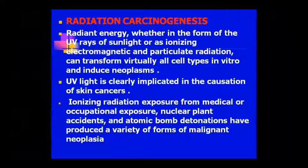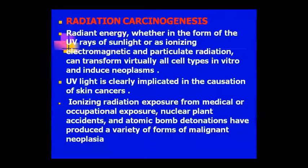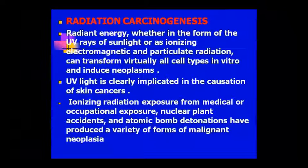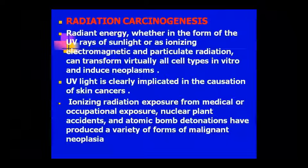The third etiological agent is the physical agent. The most responsible physical agent is radiation, which is of two types: ionizing and non-ionizing radiation. Radiant energy — whether UV rays, sunlight, ionizing electromagnetic rays, or particulate radiation — transforms cells in vitro and induces neoplasm.